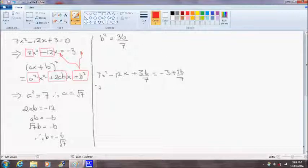So this left hand side of our equation now is a perfect square expansion of brackets square root of 7x minus 6 divided by the square root of 7 squared.